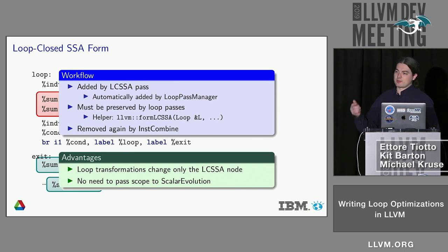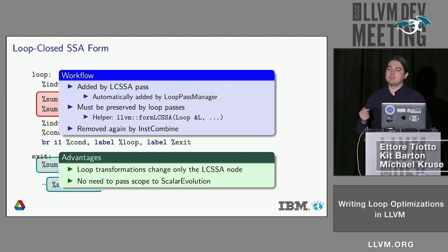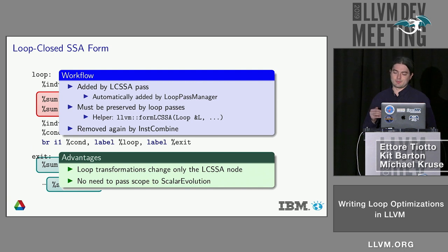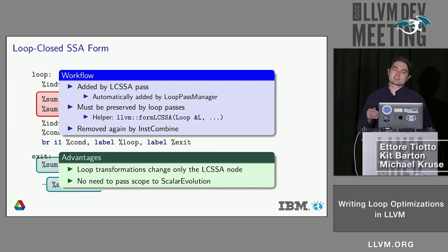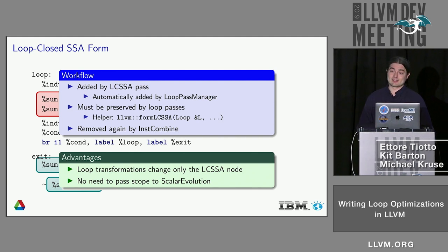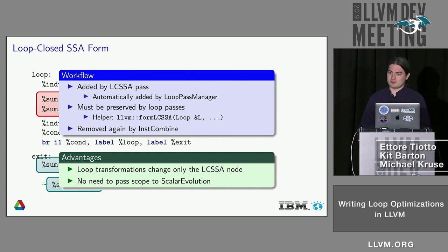The advantages of LCSSA: if you make changes within the loop that change the result, you only need to change the replace-all-uses-with for the LCSSA phi instruction. Only the use after the loop — the LCSSA phi instruction — is affected; everything else is unaffected. This could theoretically be an advantage if you ran multiple loop passes in parallel so they would not interfere with each other, which the current framework does not support and will not support in the foreseeable future.